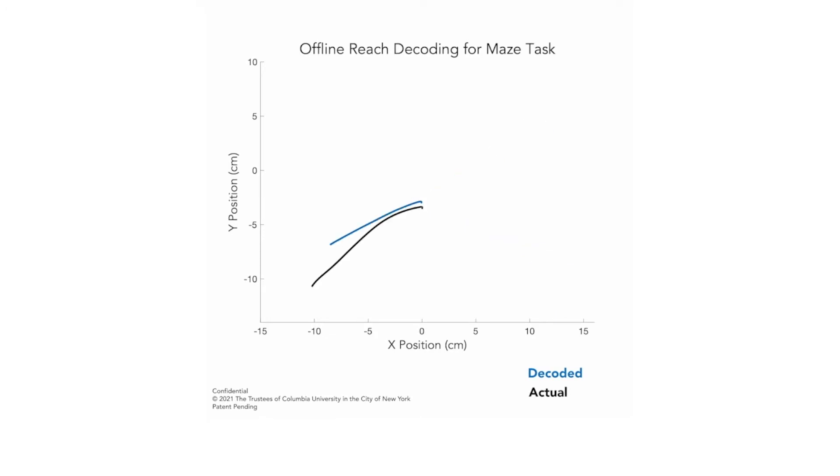Well-trained monkeys reach very quickly. And the blue trace is our decode in real time based on the neural data at that moment and over about a half second before that moment. It's our guess as to what he's trying to do at that moment.